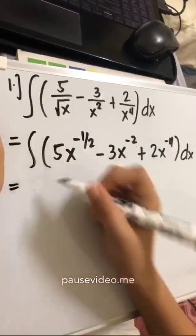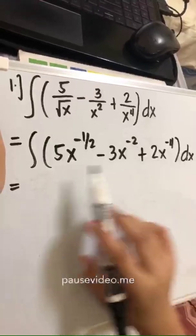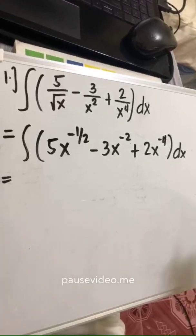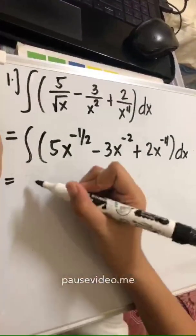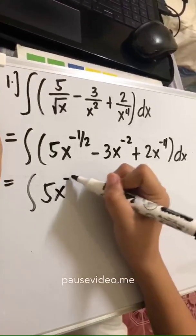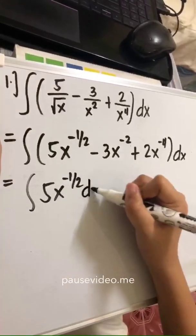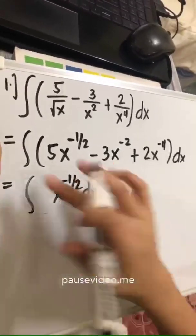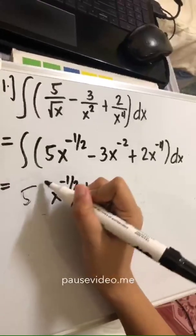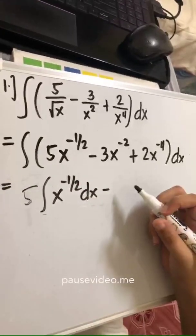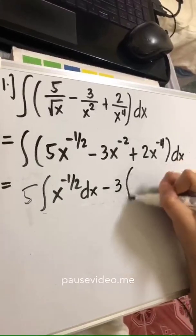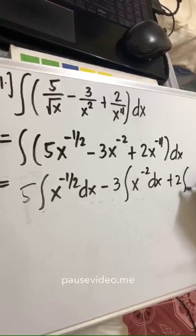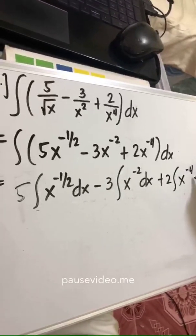Since this involves three terms, we can integrate them separately. We have the integral of 5x raised to negative 1/2 dx, minus — moving the constant outside the integration symbol — 3 times the integral of x raised to negative 2 dx, plus 2 times the integral of x raised to negative 4 dx.